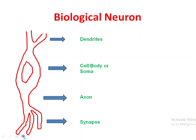Dendrites are clearly the inputs of the biological neuron, and some processes are going on in the cell body, and the axon is the passage for that information. Dendrites accept inputs from other neurons — this neuron is connected from many neurons and connected to many neurons, so dendrites are responsible for accepting input from other neurons.